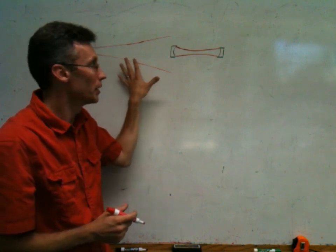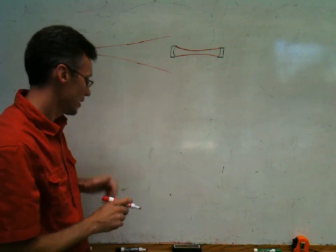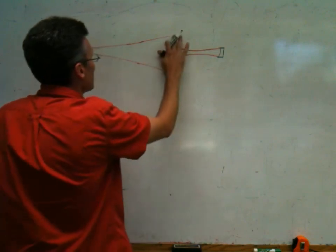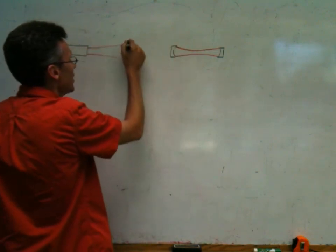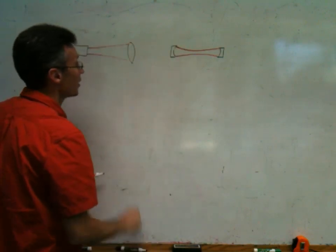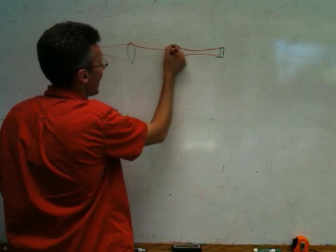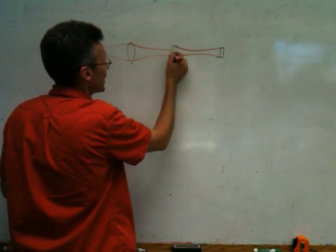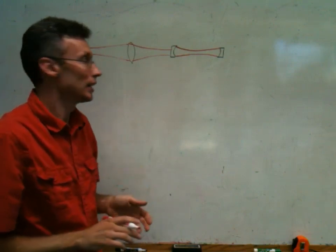So assuming that we don't want to be wasting power like that, we can put in some lens or system of lenses to try to better match the shape of the light going into the cavity to that's expected on the inside.